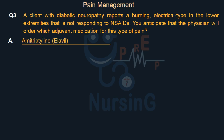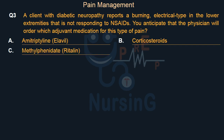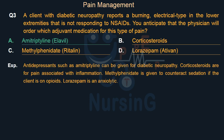Option A: Amitriptyline. Option B: Corticosteroids. Option C: Methylphenidate. Option D: Lorazepam. Right answer is Option A: Amitriptyline. Antidepressants such as amitriptyline can be given for diabetic neuropathy. Corticosteroids are for pain associated with inflammation. Methylphenidate is given to counteract sedation if the client is on opioids. Lorazepam is an anxiolytic.